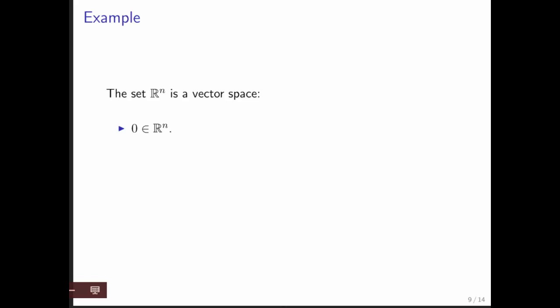0 is in R^n. If you're given two vectors in R^n and you add them together, then you get another vector in R^n. And if you're given a vector in R^n and a scalar, then you multiply that scalar times that vector, then you simply get another vector with n components. So, it's in R^n.